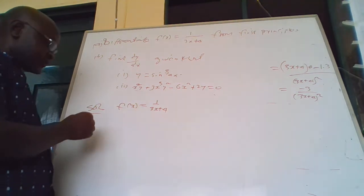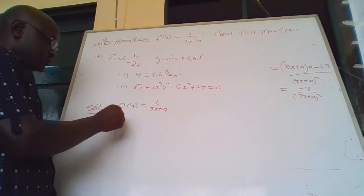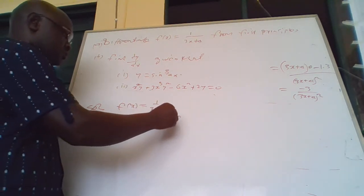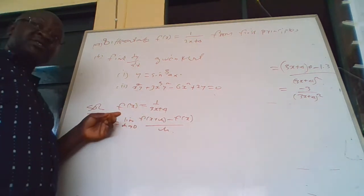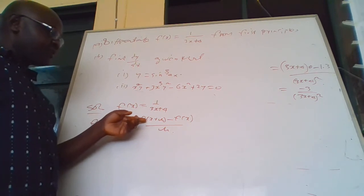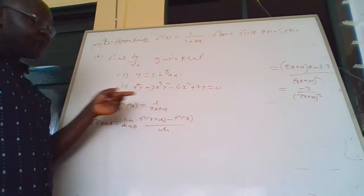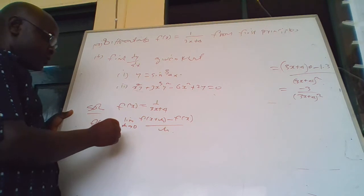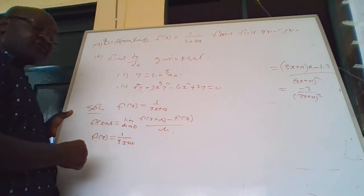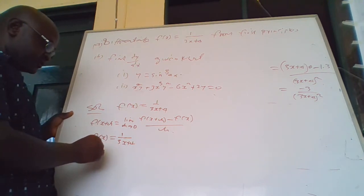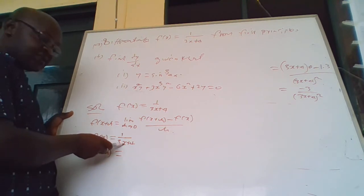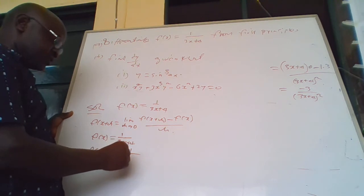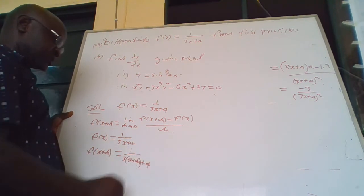Now, differentiating from first principle, we must know that in the limit when h approaches 0, we have f of x plus h minus f of x, all over h. From this equation, our f of x equals 1 over 3x plus 4. Then our f of x plus h: wherever there is x in this equation, we replace with x plus h. So f of x plus h equals 1 over 3 times x plus h, plus 4.